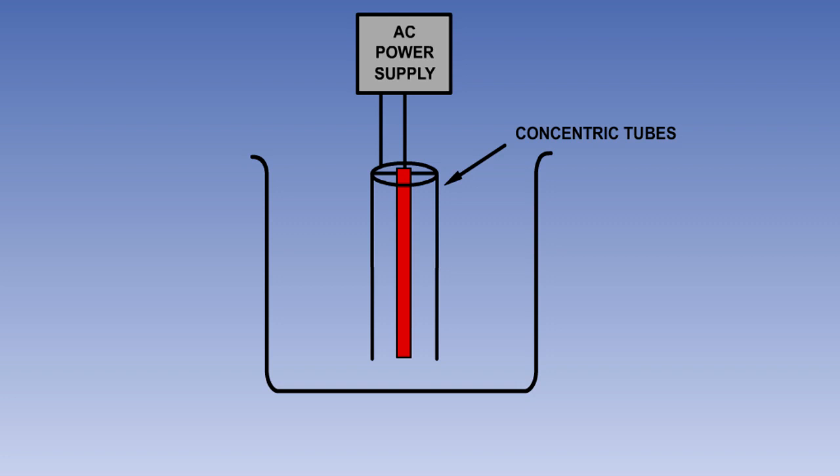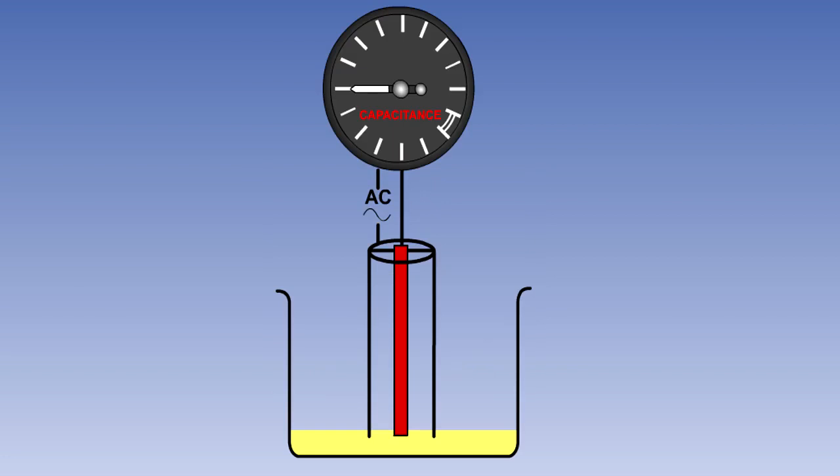A typical capacitive fuel measuring device consists of two concentric tubes of metal with an AC supply across them, standing upright in the fuel tank. The gap between the two tubes will be full of air when the tank is empty and full of fuel when the tank is full. At intermediate fuel levels, the gap will have part fuel and part air. The capacitance of the device will change as the proportion of fuel and air changes. This capacitance is measured and displayed on a gauge as fuel quantity.